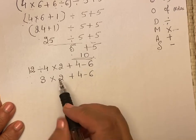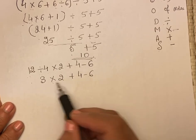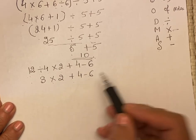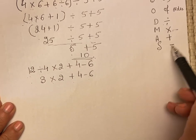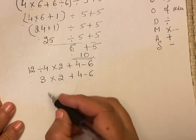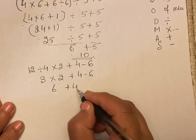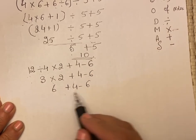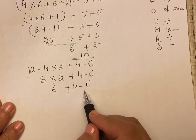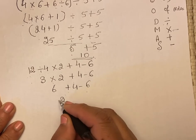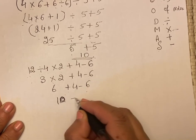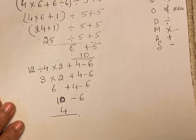Now there are three signs: multiplication, addition and subtraction. Which comes first? Multiplication. 6 plus 4 minus 6. Now there are two signs: addition and subtraction. Addition comes first. 6 plus 4, 10. 10 minus 6. Answer comes equal to 4.